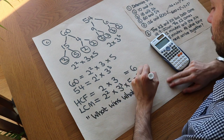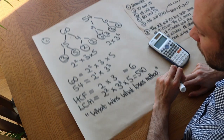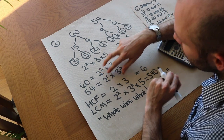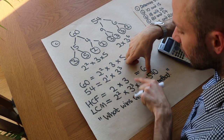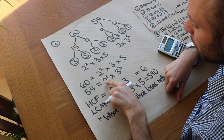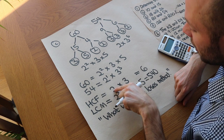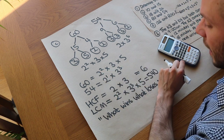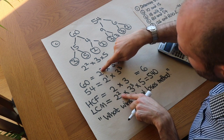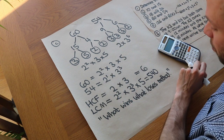I call that the 'what wins, what loses' method — it's just a name I made up, not an actual mathematical term. The reason it works is that when finding a common factor, the lower power of a prime is common to both numbers, since 2 to the 1 divides into both 2 to the 1 and 2 squared. Similarly, for the LCM, both 2 squared and 2 to the 1 divide into 2 squared.